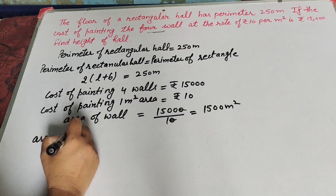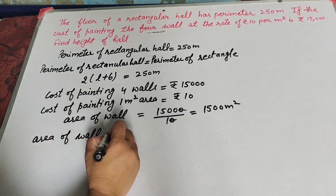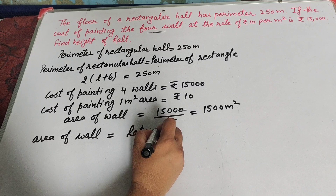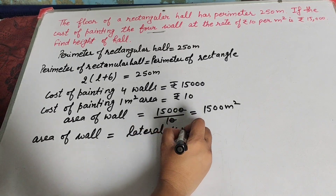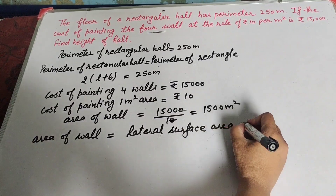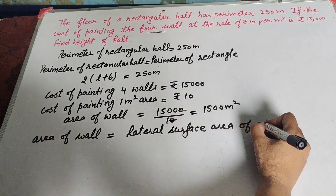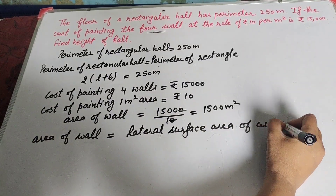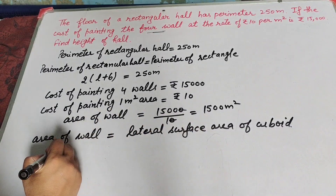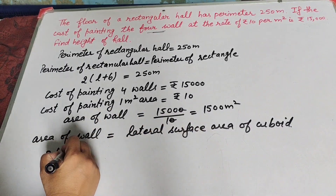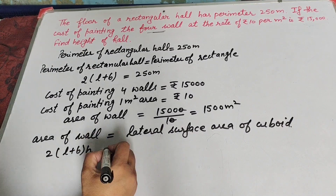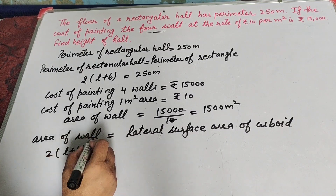Area of the wall equals the lateral surface area of a cuboid, because only four walls are painted — we do not find the area of the ceiling and the floor. So area of wall equals lateral surface area of cuboid, and we know the formula to find the lateral surface area of a cuboid.